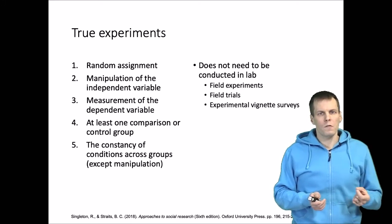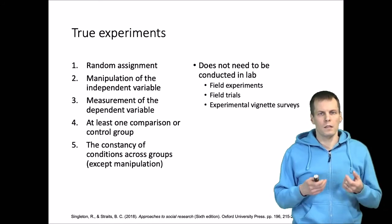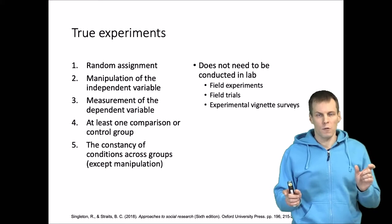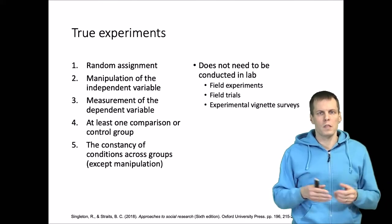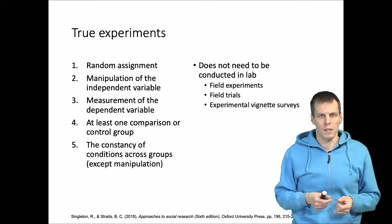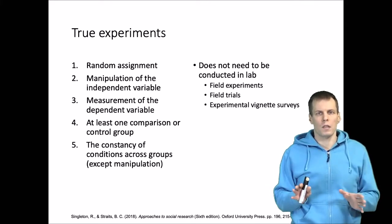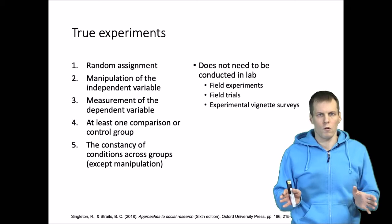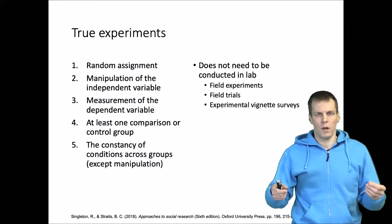An important class of these randomized surveys is the experimental vignette study. These studies present informants with a scenario, some characteristics of the scenario are varied, the two variations are randomly assigned to informants, and then we check if there's a difference. The important part is not that we have a lab, but that we have random assignment and experimental control so that the treatment and control groups only differ in the manipulation they receive.